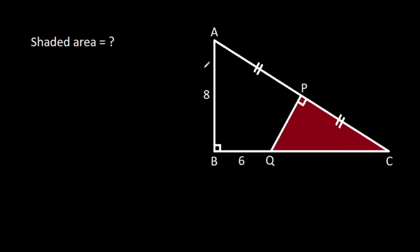In this video, we have been given that angle ABC is 90 degrees, angle CPQ is 90 degrees, and AP is equal to CP, and AB is 8, and BQ is 6. Then we have to find the shaded area.